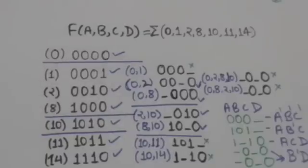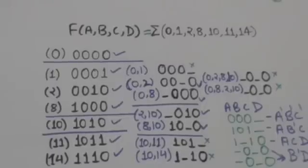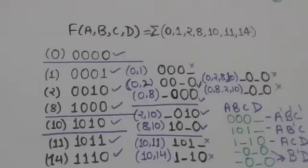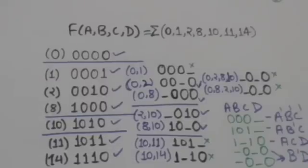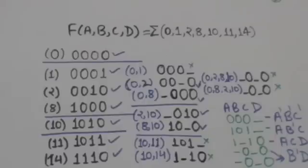Minterms which differ by only one variable will be combined and the unmatched variable should be removed. That means binary representations of minterms which differ by only one bit should be combined, the unmatched bit should be removed, and we will put a dash in its place. This procedure will be repeated until there are no binary numbers which differ by only one bit.